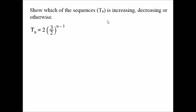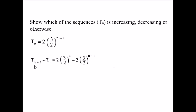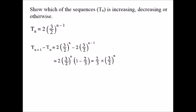Another sequence: T(n) = 2 × (3/2)^(n-1). Check if it is increasing, decreasing, or otherwise. Find T(n+1) - T(n). T(n+1) = 2 × (3/2)^n. Subtracting, factor out 2 × (3/2)^n as a common factor. Dividing each term by the common factor gives: (1 - (3/2)^(-1)) = 1 - 2/3 = 1/3.